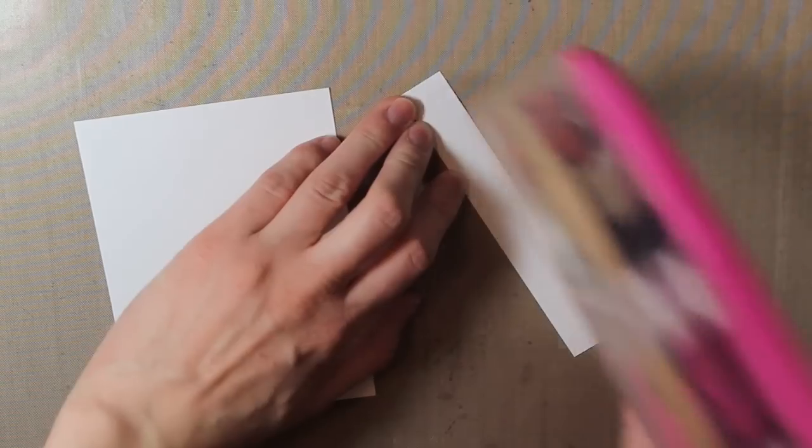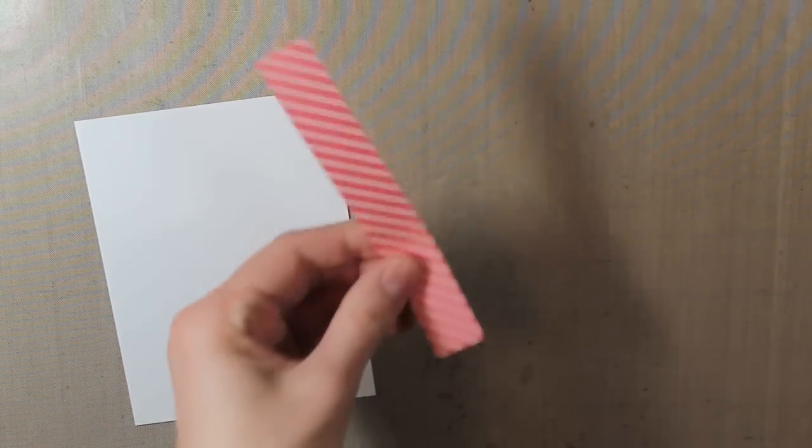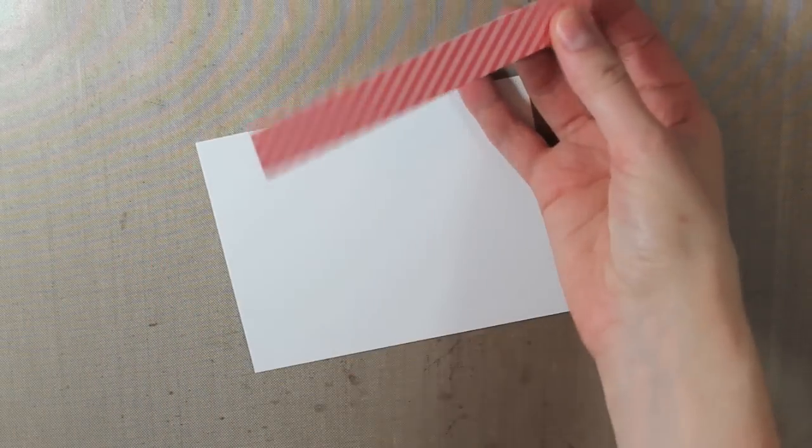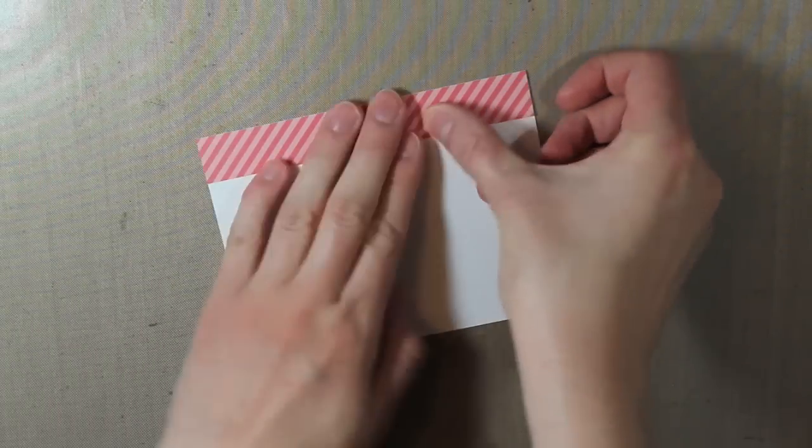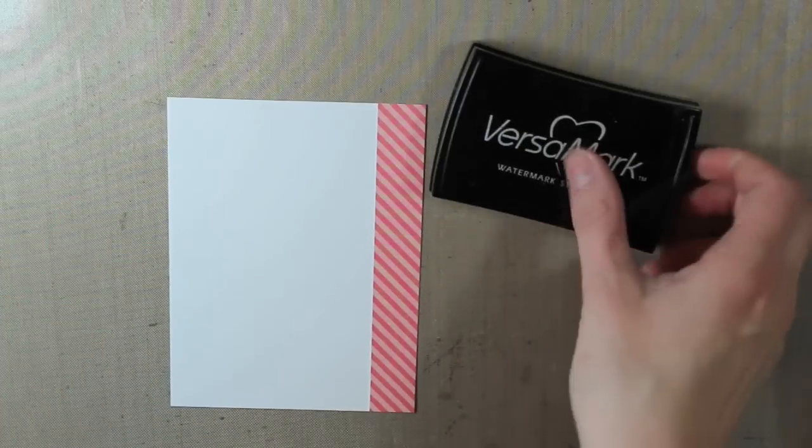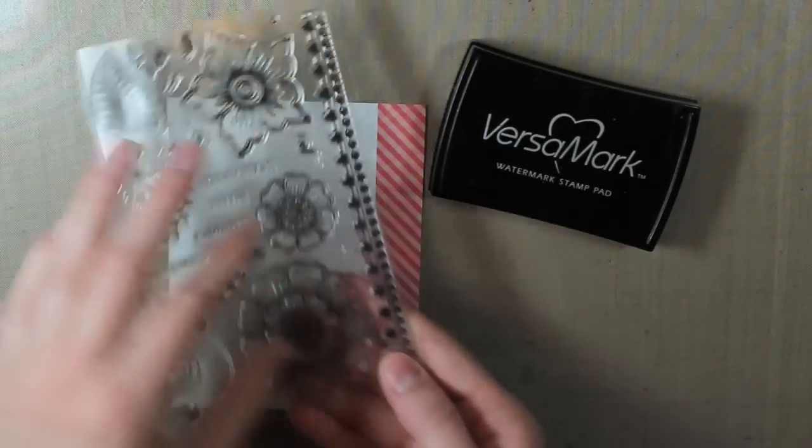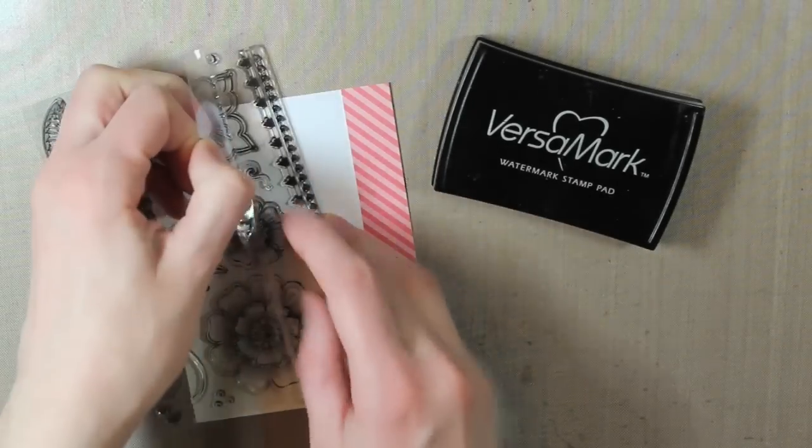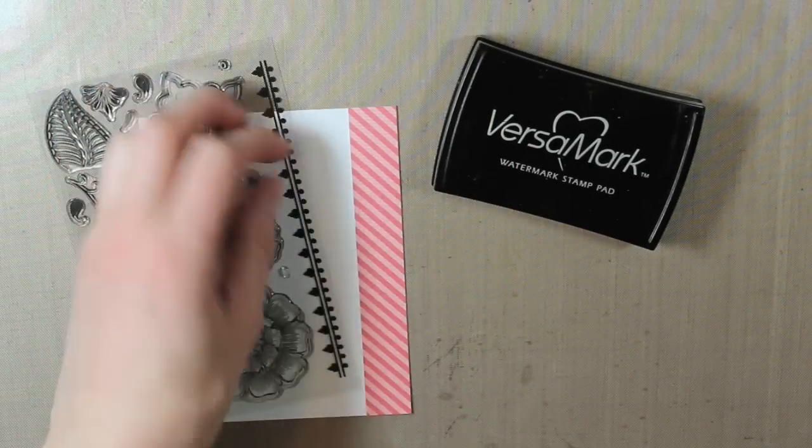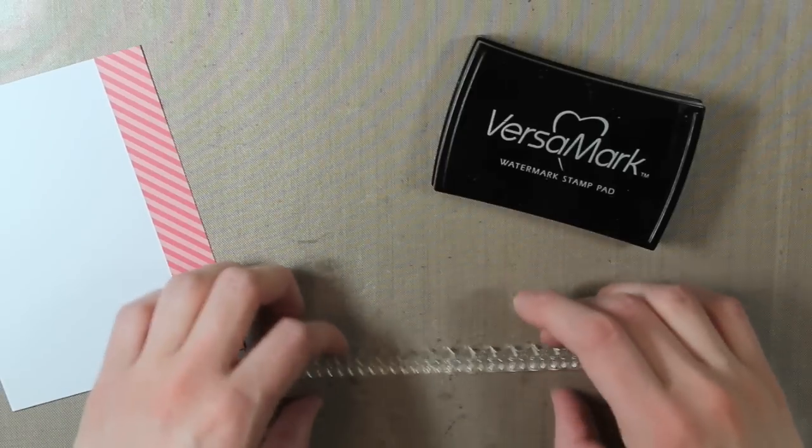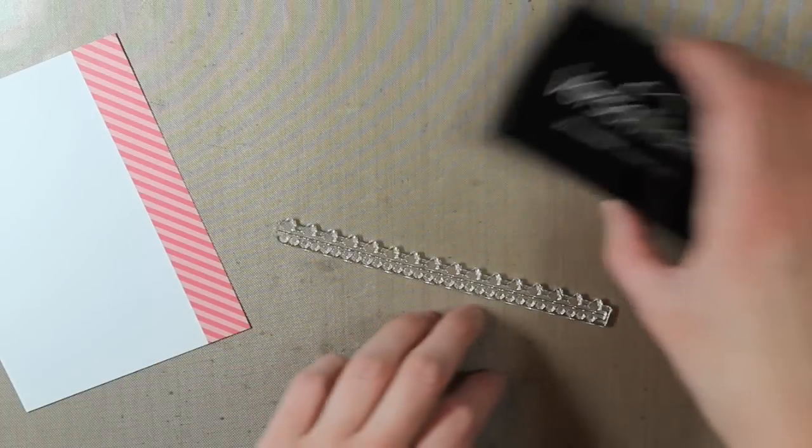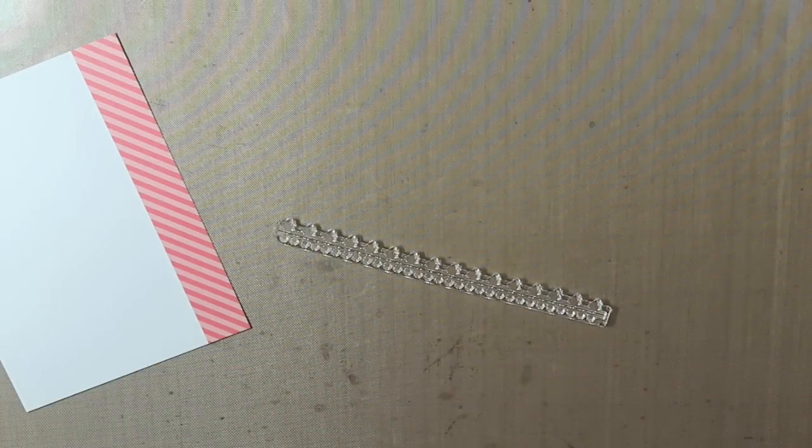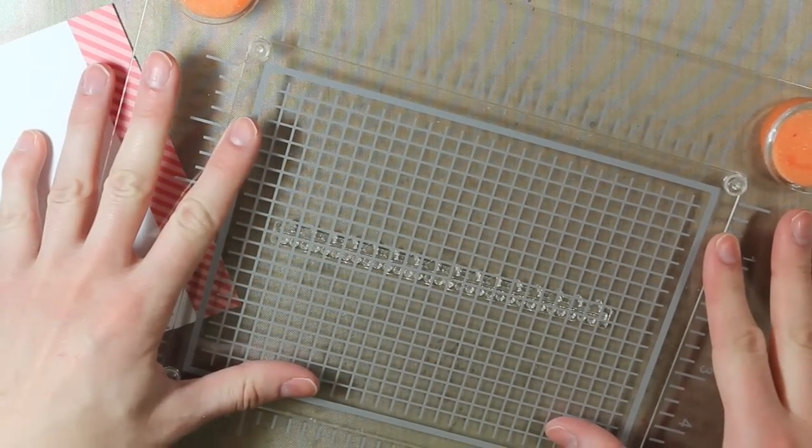And then I'm taking this strip of pattern paper from the Lawn Fawn Let's Polka 6x6 paper pad and adding that onto a piece of white cardstock that measures 4 inches by 5.25 inches. I'm adding that to the right hand side. And then I'm going to heat emboss this row of shapes. It has some dots and they look kind of like flowery images. I'm just going to throw that onto my nonstick craft sheet so that it straightens itself out and then add it to my Fiskars stamp press.